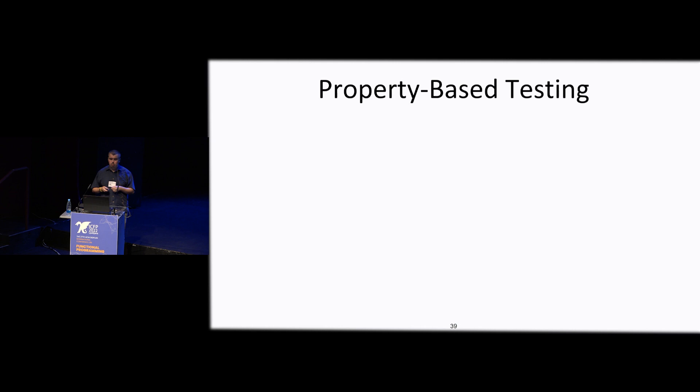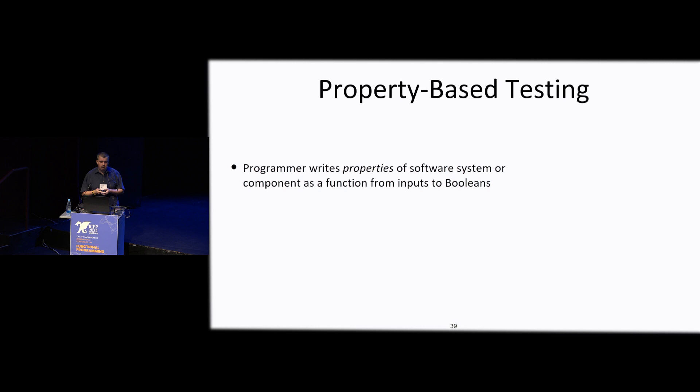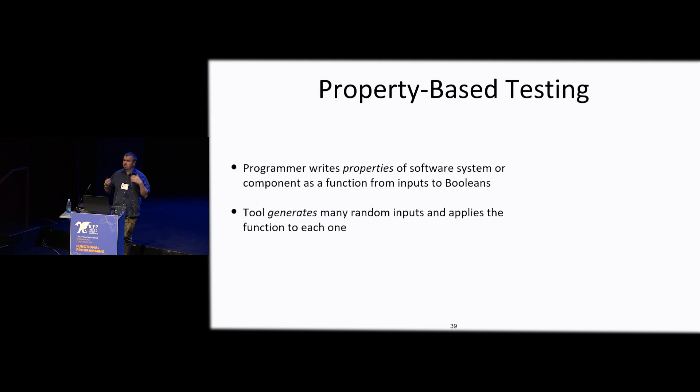For testing, we adopt the standard mechanism of property-based testing. You write properties as boolean functions, implement generators that create random inputs and apply the functions until a bug is found. This approach was pioneered by John Hughes and Koen Claessen and has been replicated for multiple languages and settings.